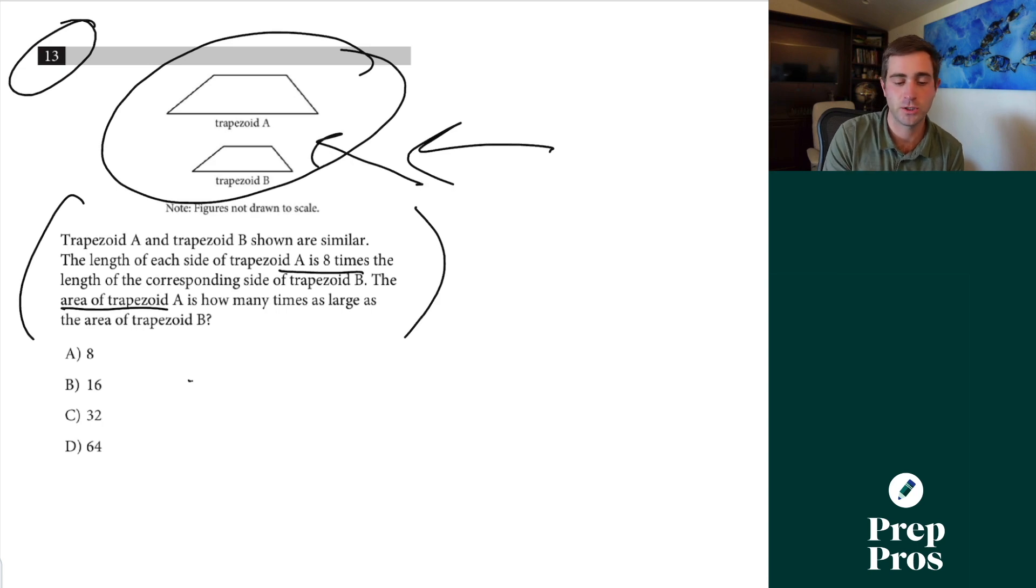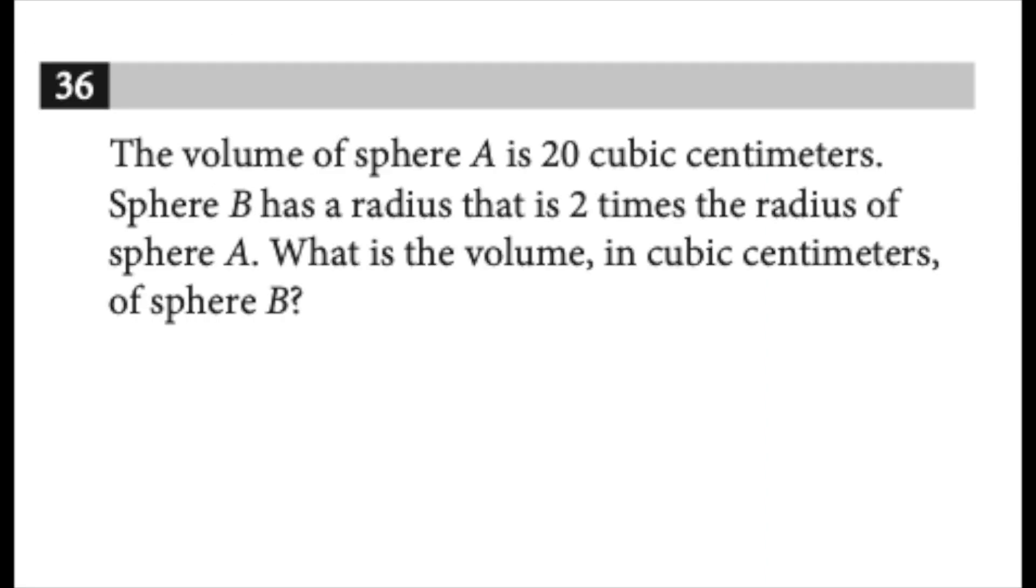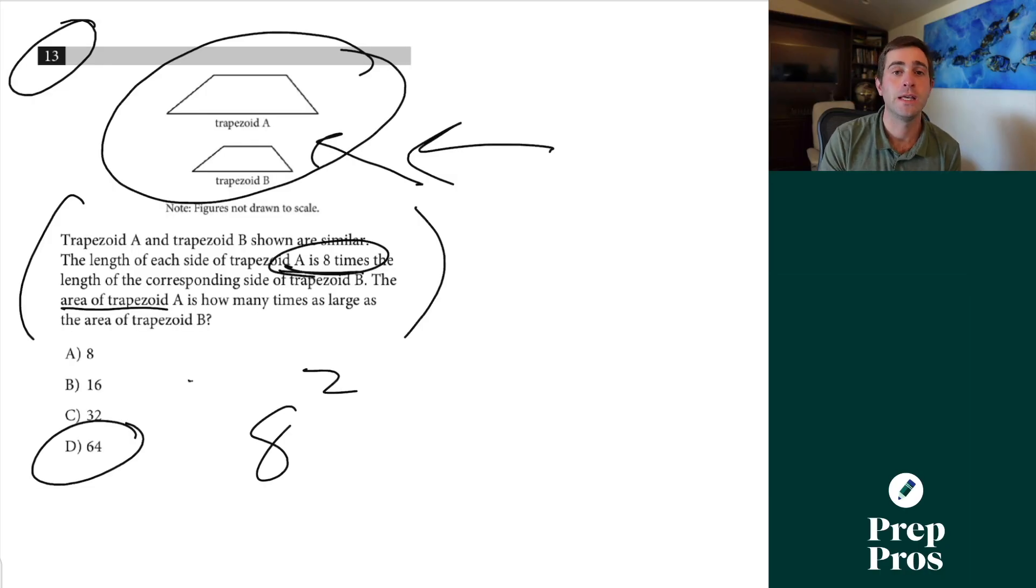If you're dealing with a two-dimensional object you're simply going to take your scale factor, how many times proportionally bigger a side length is of one shape than the other, and you're going to square it. So the answer to this is as simple as eight squared is going to be your answer of 64. Now if you're dealing with a three-dimensional object like spheres and rectangles which we have seen on the SAT you're going to take your scale factor and you're simply going to cube it. So if we have one rectangle has side lengths that are three times greater than another one the new area is going to be the same as three cubed which would mean the new area would be 27 times larger.